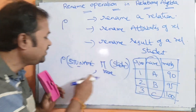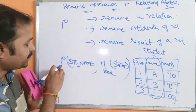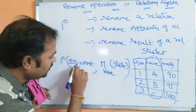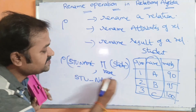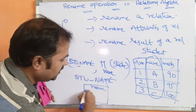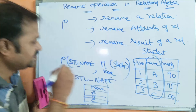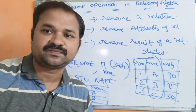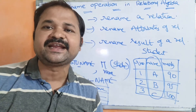That output will be stored in a relation called student_name. This is the advantage of the rename operator. The relation name is student_name, it has an attribute called name, and the corresponding values are A, B, C. This is the advantage of the rename operator in relational algebra.